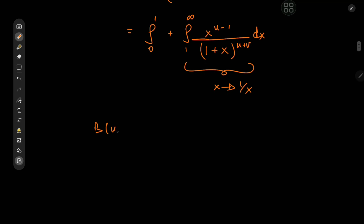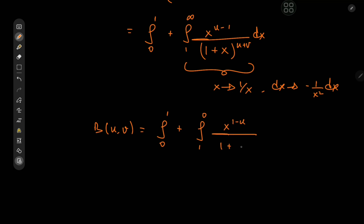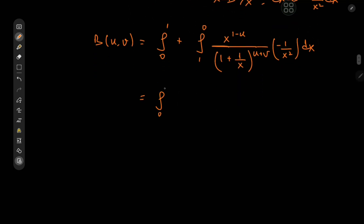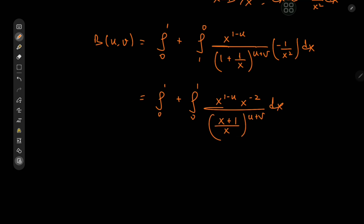So by that token we have beta(u, v) equal to the integral from 0 to 1 plus this integral, now from 1 to 0, and dx gets taken to negative 1/x squared dx. So we have the integral from 1 to 0 of x to the negative 1 — so that would be x to the 1 minus u — divided by 1 plus 1/x to the u plus v, times negative 1/x squared dx. We can get rid of the negative sign by switching the limits of integration, and it looks like we're going to get some nice simplifications.